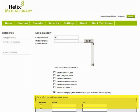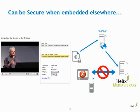You can also secure content down to an IP address range — for example, making content only available on campus or within a specific lab. This can be done on a per-category basis rather than for the entire library. Also, when embedding content elsewhere, you can require users to be logged in to view it. So if someone grabs your embed code and puts it on a blog, you can make the media library only play back content when somebody is logged in to the system.